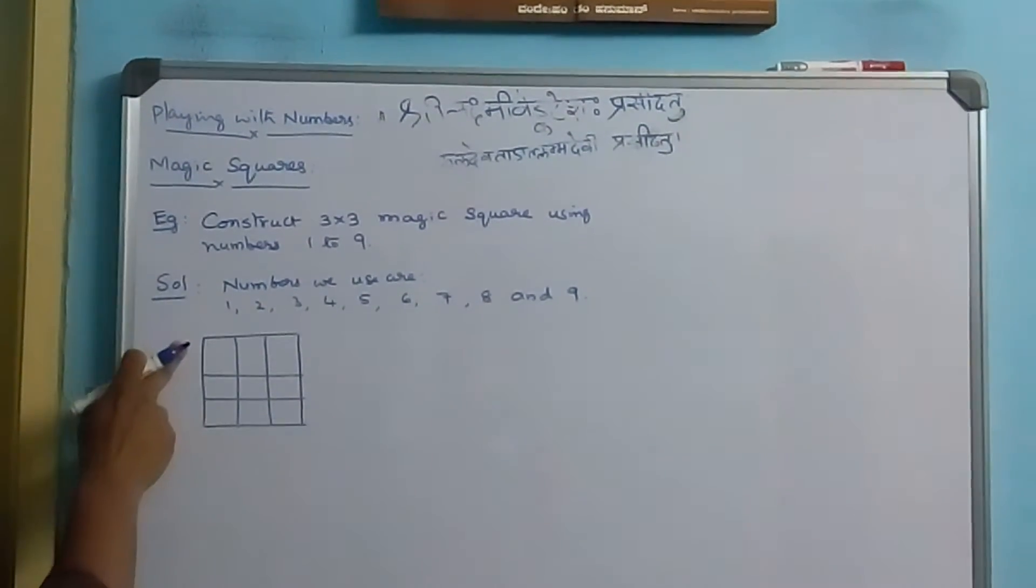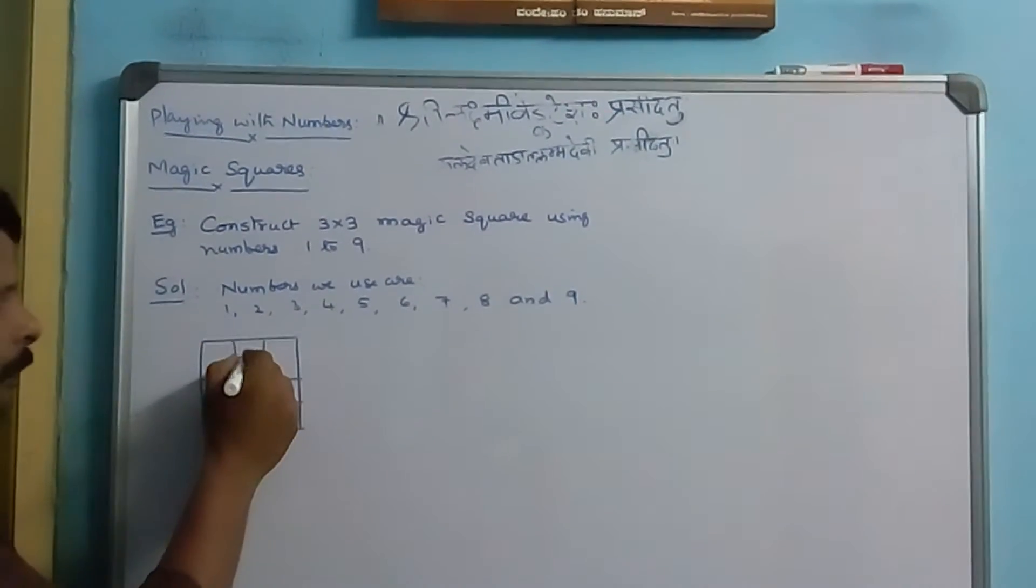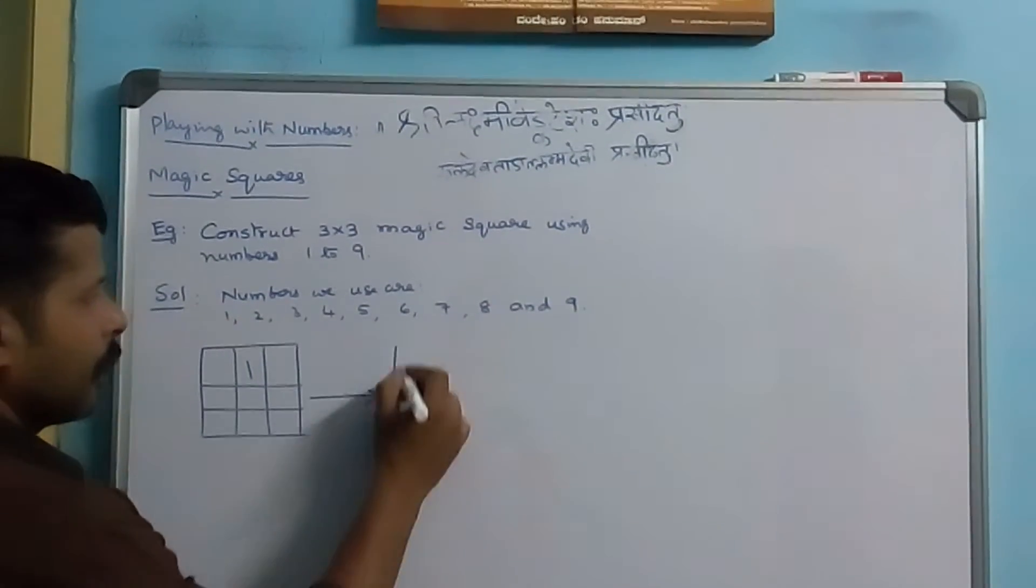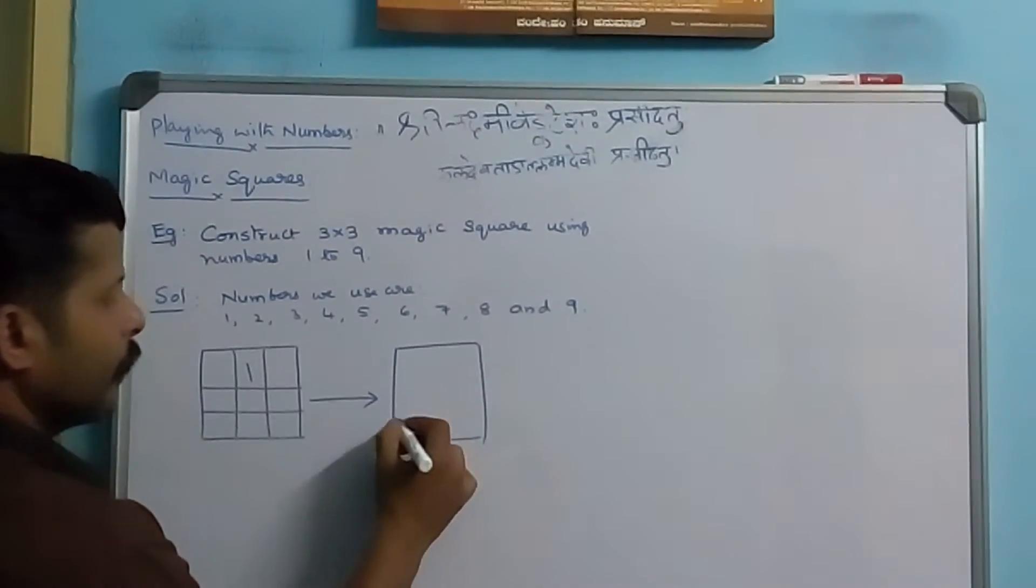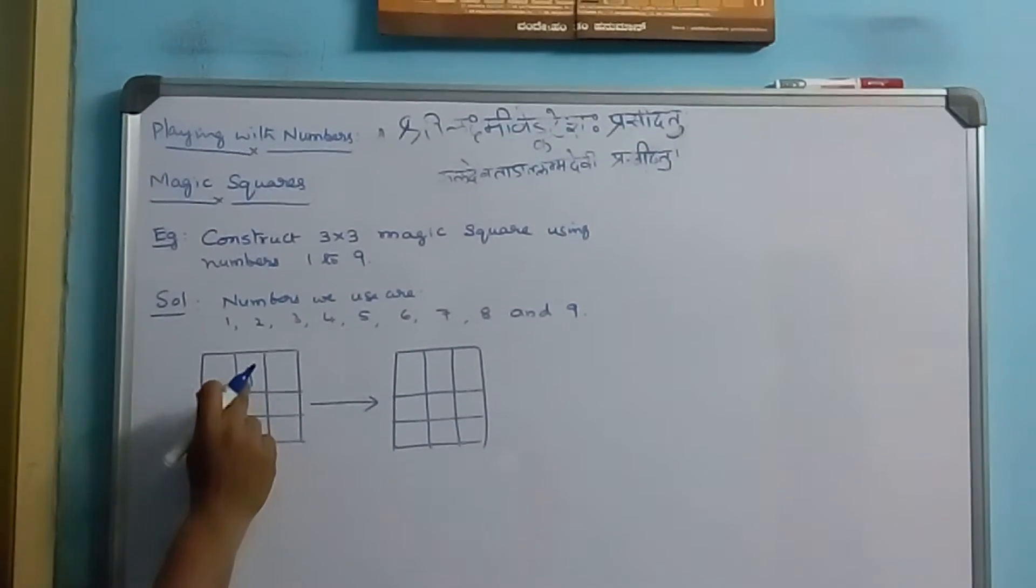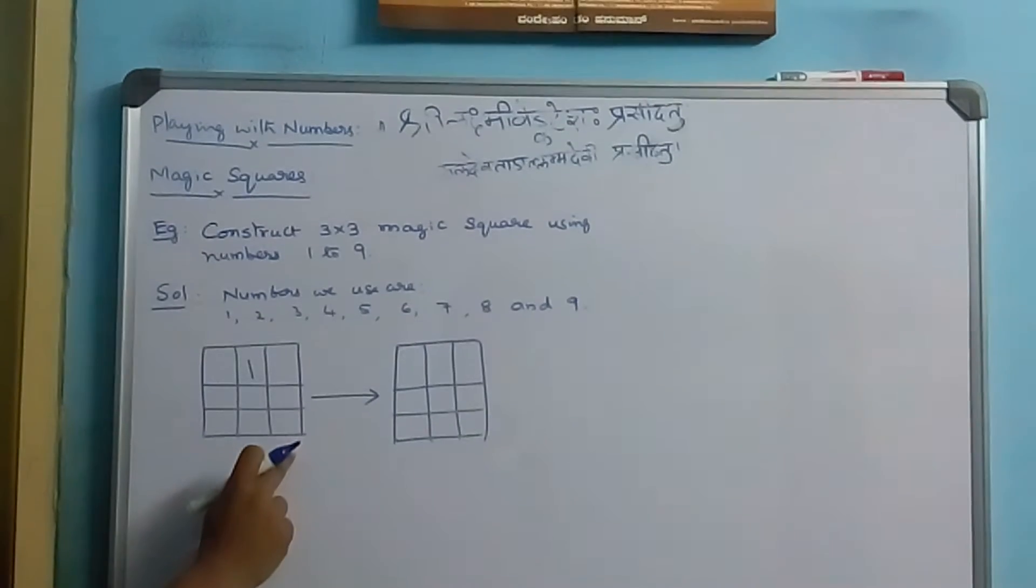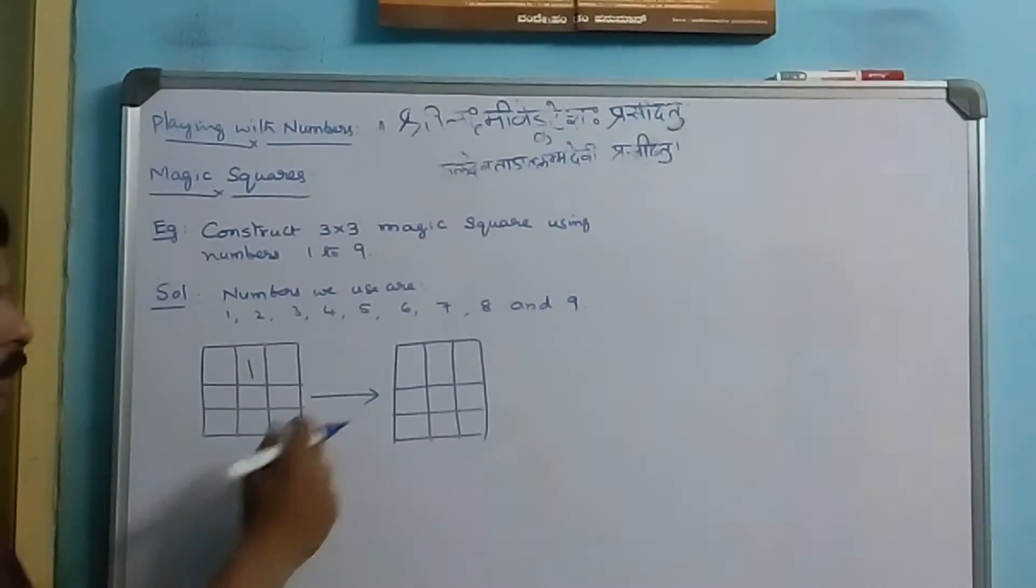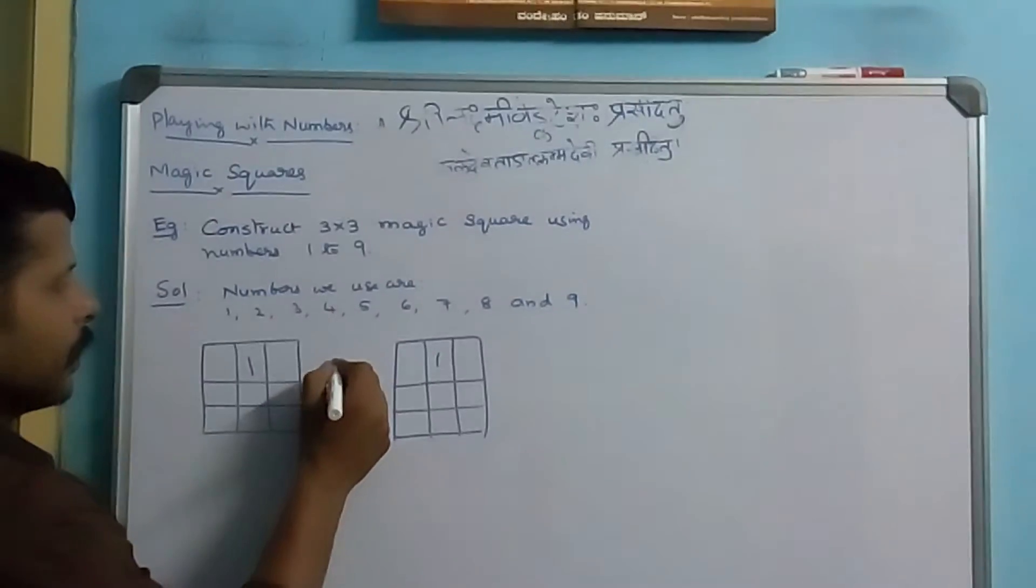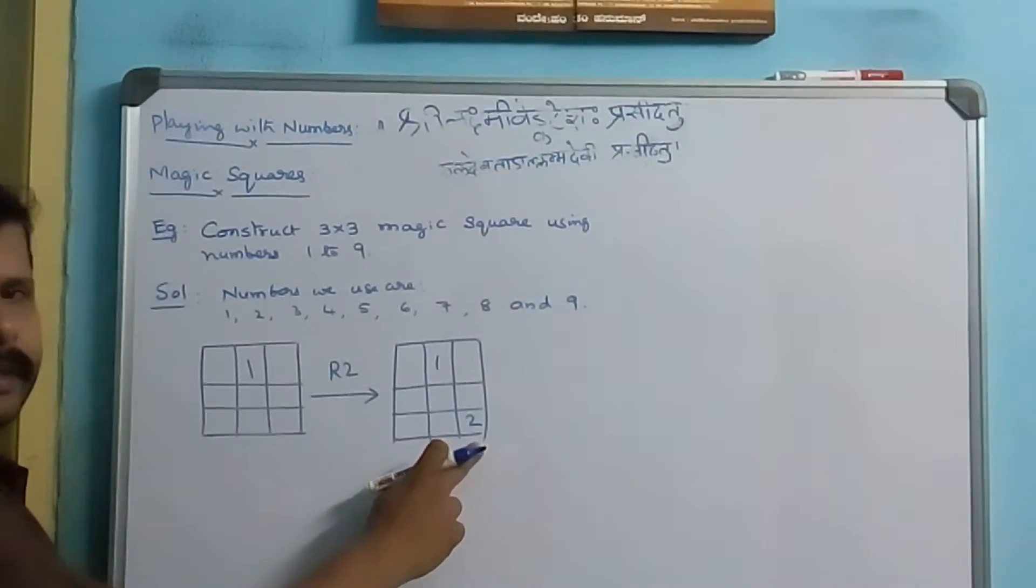We will start with the middle cell of the top row with the first number. Then, on applying rule 1, we get the next cell filled. We don't have a diagonal but we have a next column. So, we will come down to the next column cell and fill the next number. On applying rule 2, we fill this cell.